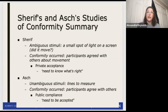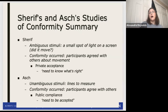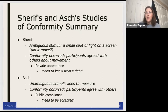In Asch's line study, the sample lines he gave were very clearly different from what the Confederates were answering - clearly the wrong answer. This was unambiguous stimuli. They knew the answer was wrong. If asked later, they'd say 'I knew it was wrong, but I went with the crowd anyway' because they didn't want to look stupid or be rejected by strangers. So there was public compliance but no private acceptance.